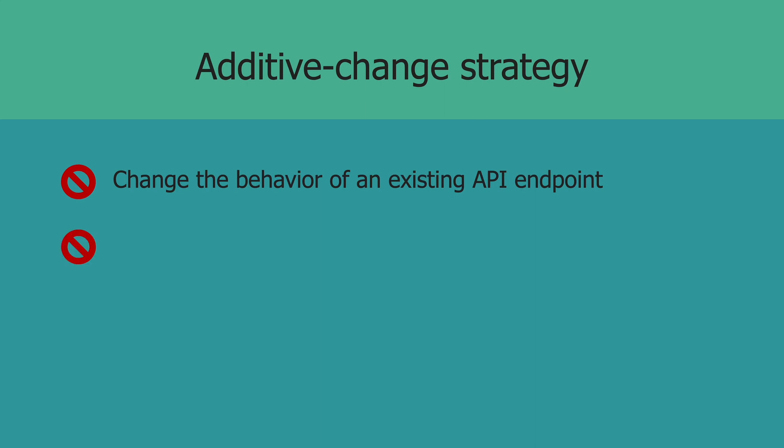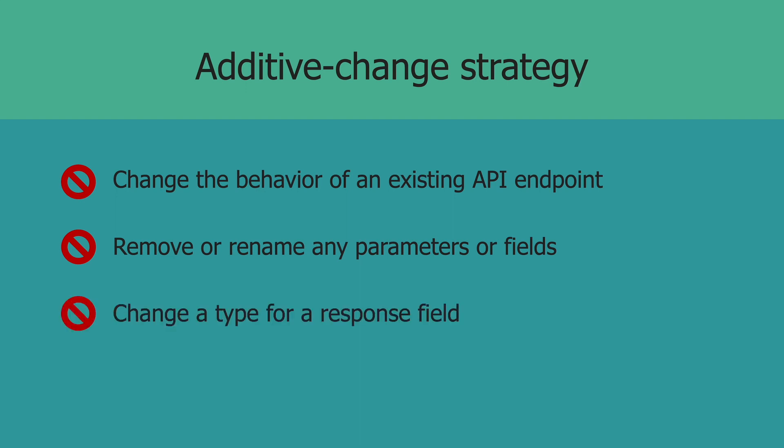Another thing you can't do is remove or rename any parameters or fields — much like the example we talked about before. The third thing you're not allowed to do is change a type for a response field. For example, if you stored numeric values as strings but now you want to change them to integers, you can't really do that. The fourth and final thing is that you can't change error codes.